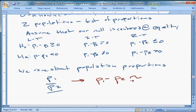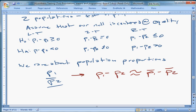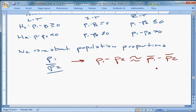So P bar one minus P bar two, right? That's our, and that's going to be our point, our best point estimator.